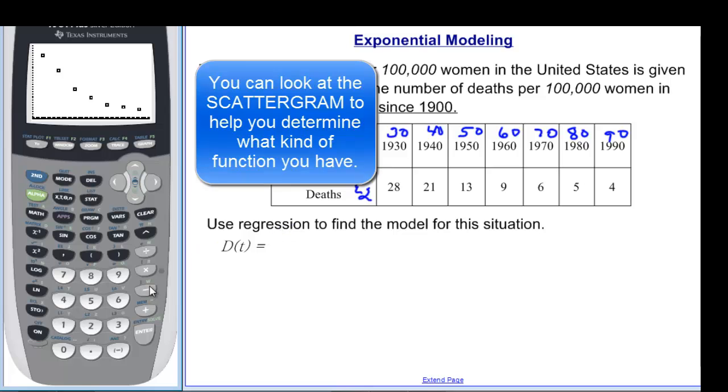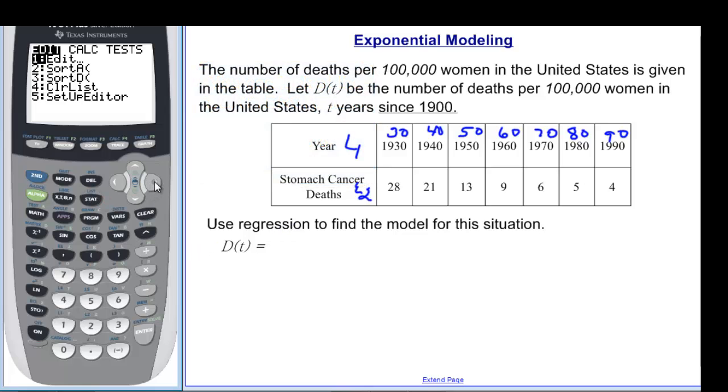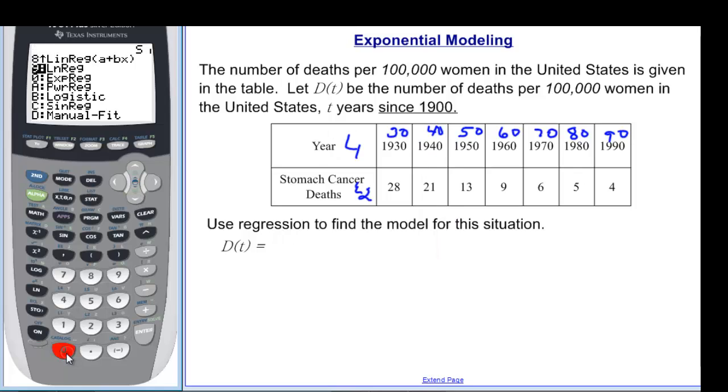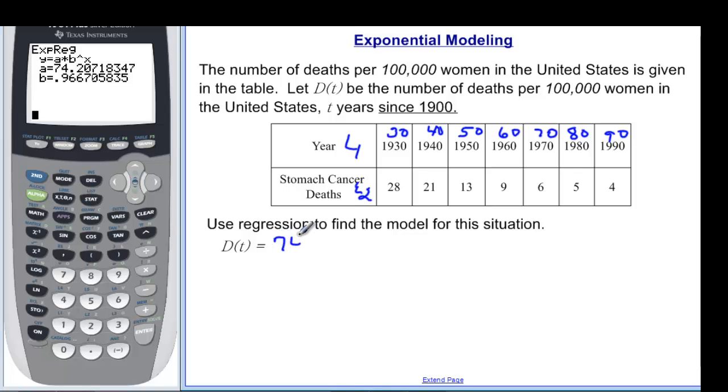So I am going to use stat over to calculate, and then if I arrow down here, once you know this, you don't have to arrow down every time anymore. 0 will give me my exponential regression, press enter, and now I know that D(t) is equal to, rounded to two decimal places, 74.21, that's my A, times B, which will be 0.97 if I rounded to two decimal places, to the t.